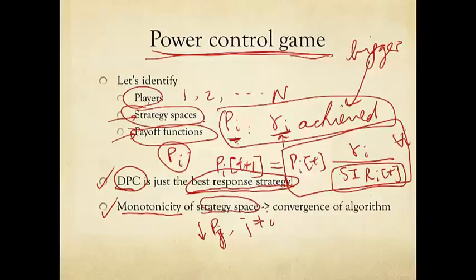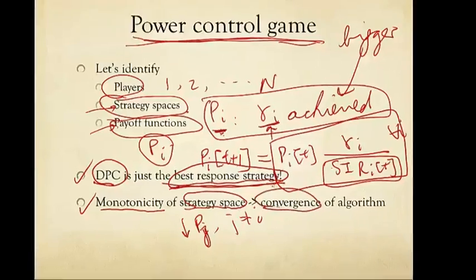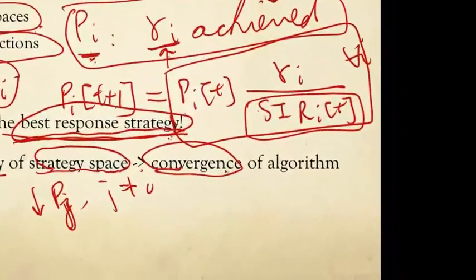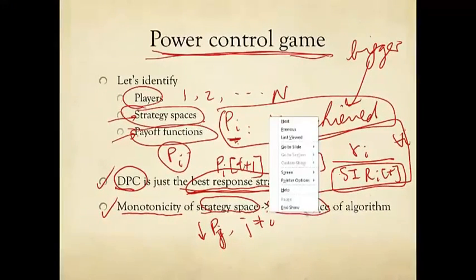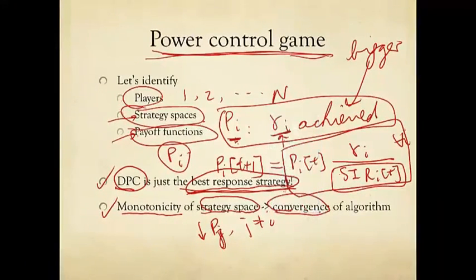It turns out that there's a special name for this kind of game, and subject to some technical condition that holds in this case, we say that best response strategies - iterations of best responses - will converge to an equilibrium, to a Nash equilibrium, provided the strategy spaces for all the users are monotonic in the sense that we just described.